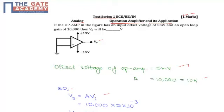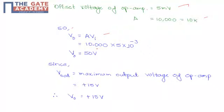The A value is given in the question, that is 10k times 5 millivolts, and therefore the V₀ value will be 50 volts.